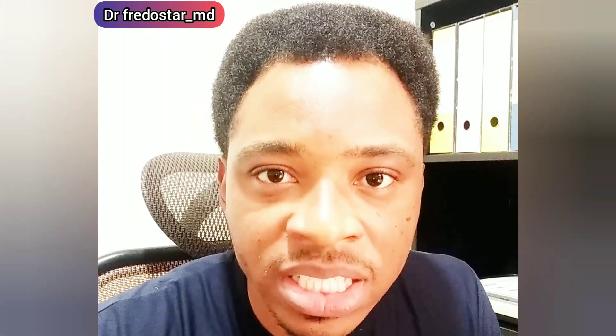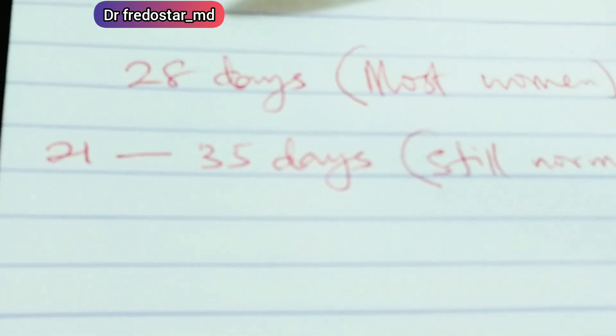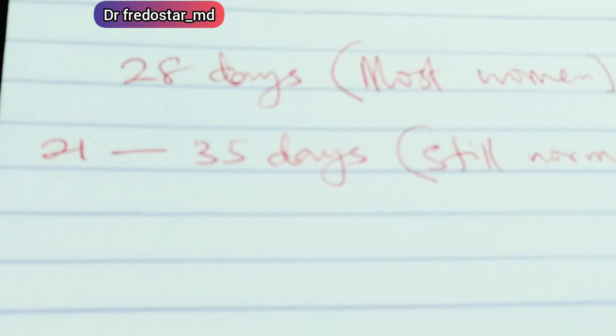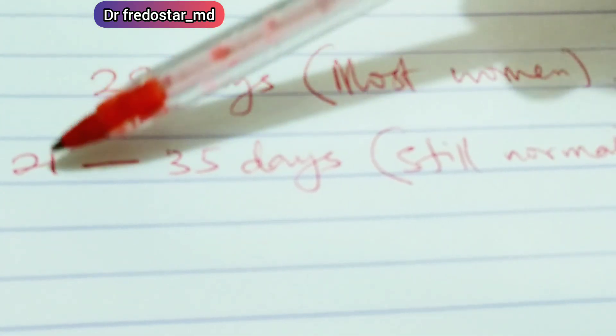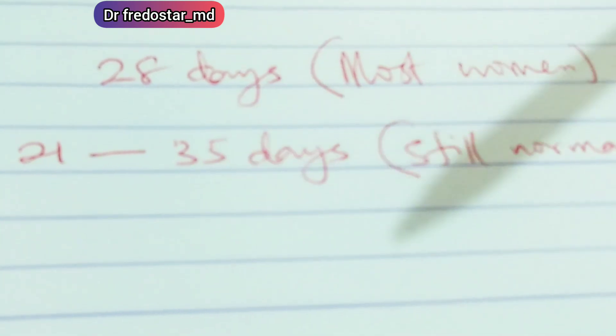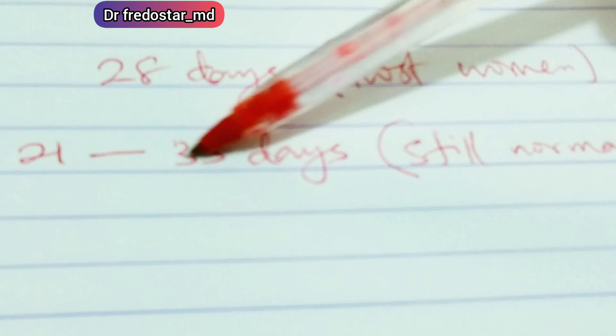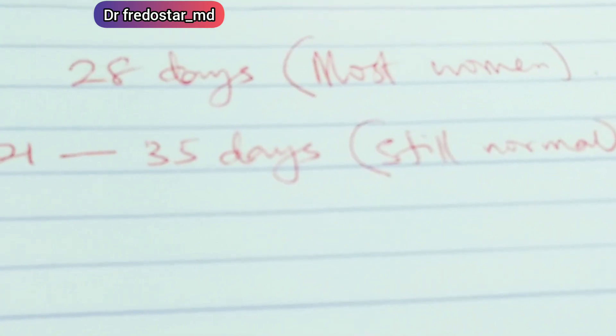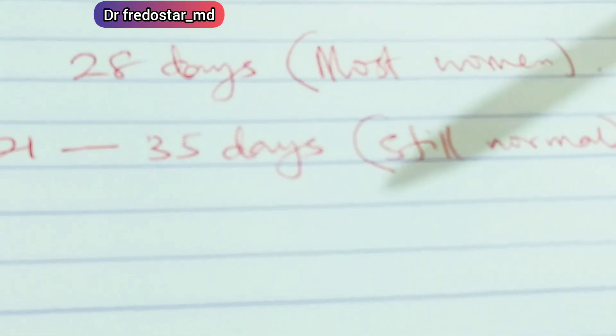No problem — let me show you something. For most women the length of their menstrual cycle is 28 days, but for some women it can be 21 days and for others it can be 35 days. What this means is that between 21 to 35 days, if your menstrual cycle falls within this range, it is completely normal. Not every woman will have a 28-day cycle — a cycle between 21 and 35 days is still normal.